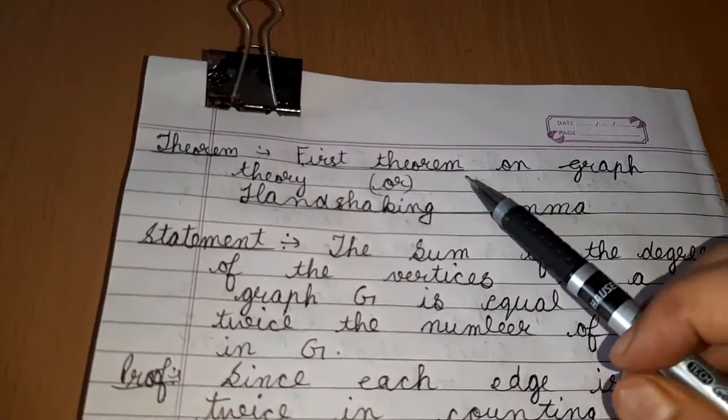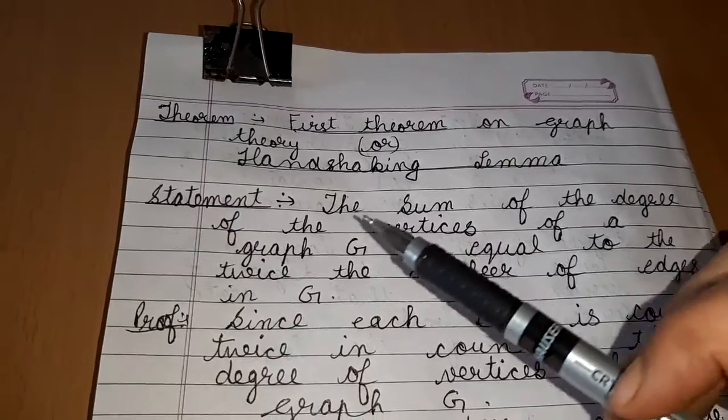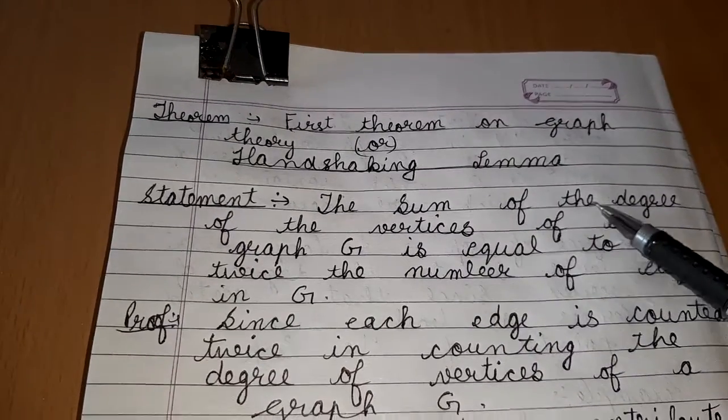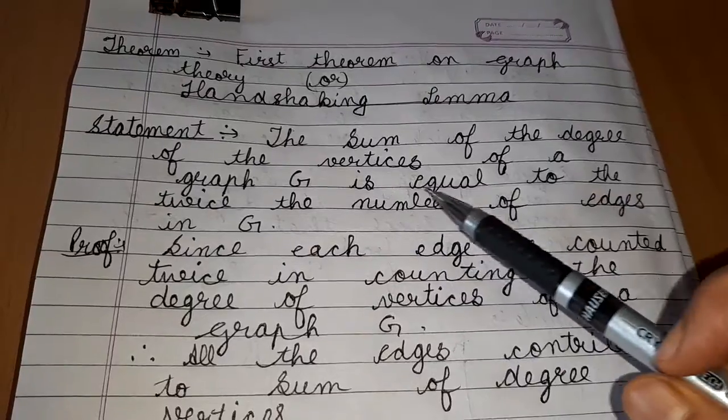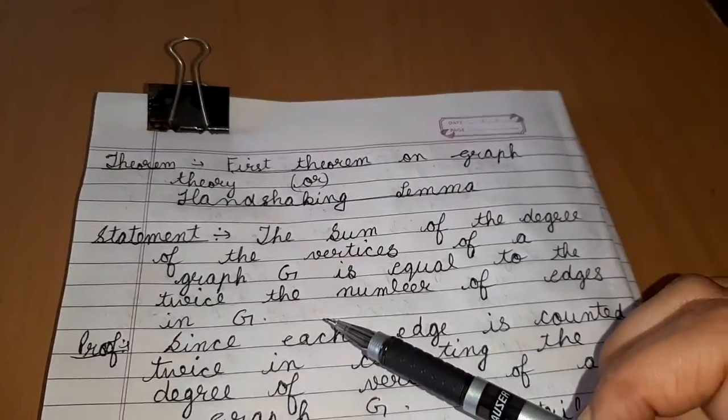Next is the first theorem on graph theory, or handshaking lemma. Its statement is: the sum of the degree of the vertices of a graph G is equal to twice the number of edges in G.